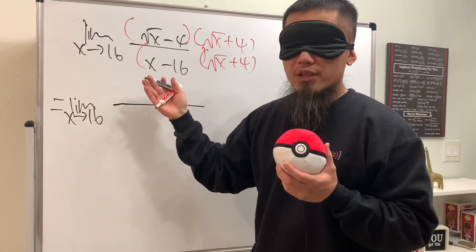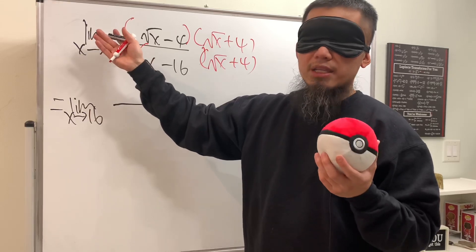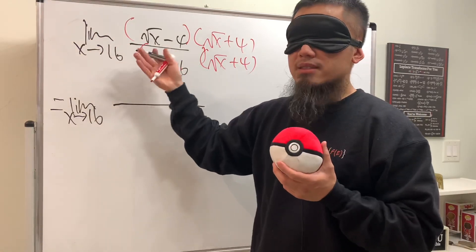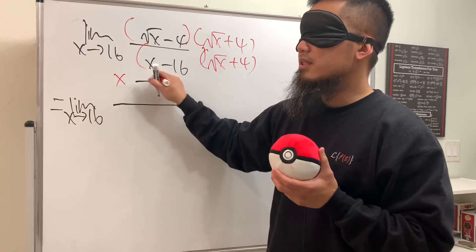Namely you square the square root which is just going to be x right inside, and then minus you square the 4 which is 16. So here you get x and then minus 16.